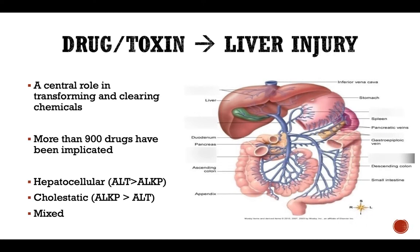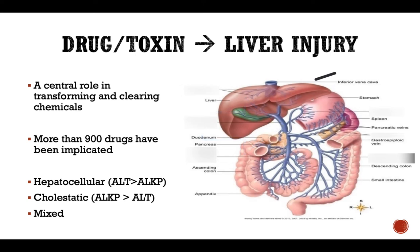The liver plays a central role in transforming and clearing chemicals, and that's one of the reasons why it's so susceptible to different toxicities and adverse reactions to drug administration. The majority of blood coming from the intestinal tract will go through the liver to get detoxified by the portal system, and after the blood is filtered in the liver it will be returned back to the systemic circulation into the caudal vena cava.